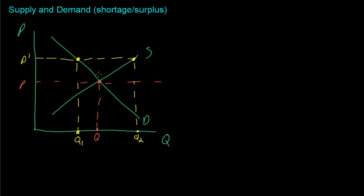We have demand which is downward sloping, supply which is upward sloping, and then we have an equilibrium price and quantity.